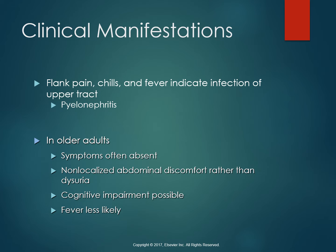People with significant bacteriuria might not have any symptoms, or they might have nonspecific symptoms such as fatigue or anorexia. Because older adults are less likely to experience a fever with UTI, body temperature as an indicator of UTI is unreliable in this population. What we usually look at with older adults is cognitive impairment — we see a lot of confusion in older patients that come in with UTI.